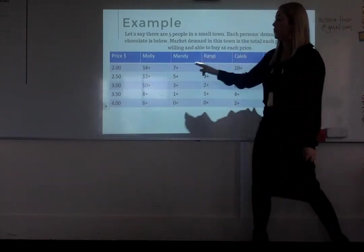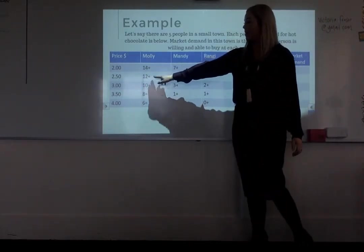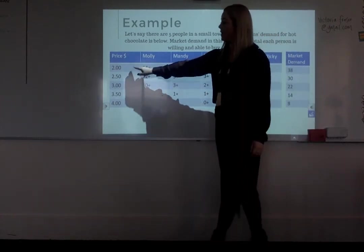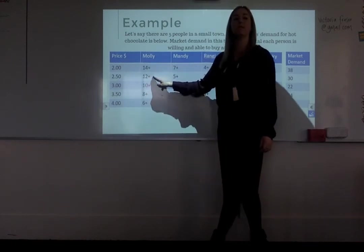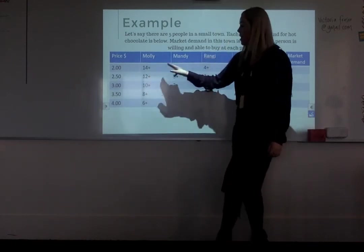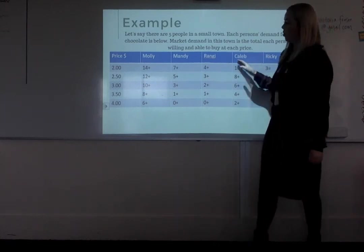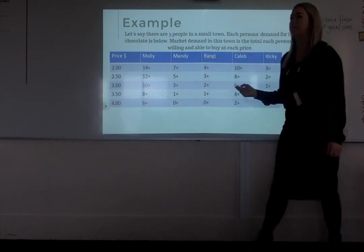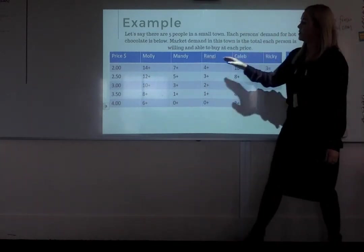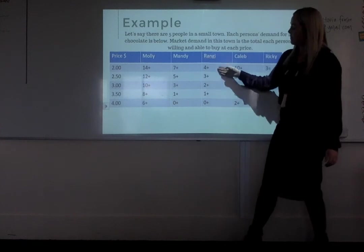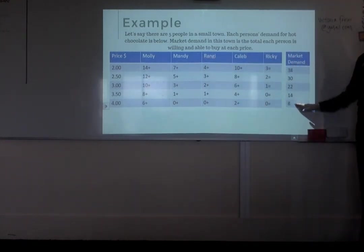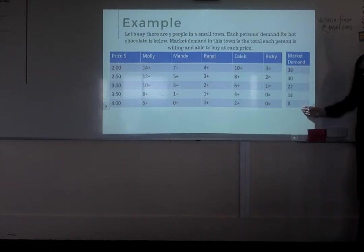At $2.50, Molly is willing and able to buy 12 hot chocolates — so we can see when the price increases, her demand decreases. That happens for everybody because of the law of demand: when the price goes up, demand goes down. As the price goes up, everybody's demand changes, which impacts our overall market demand as well. This is what we call our market demand.